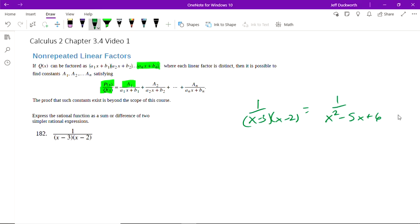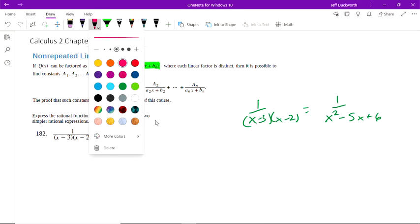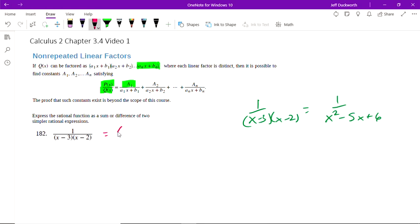And we have no real good way of integrating 1 over X squared minus 5X plus 6. There's no good substitution or anything like that. But if we can break it into things that look like this here, so this is going to equal some value A over X minus 3 plus some value.